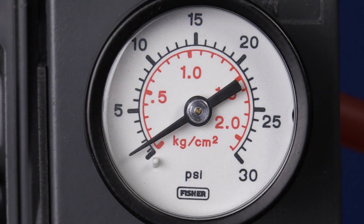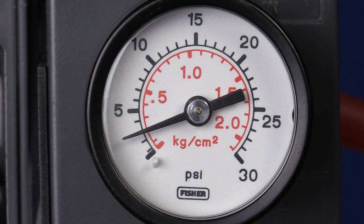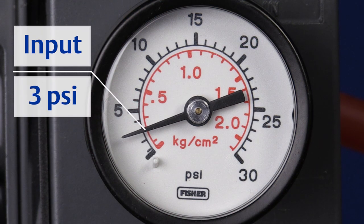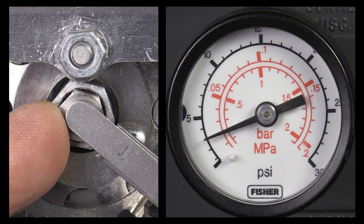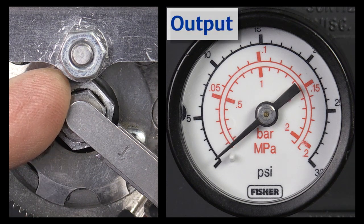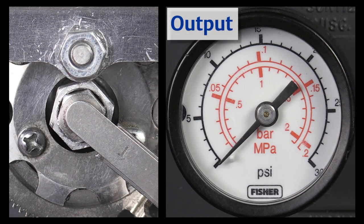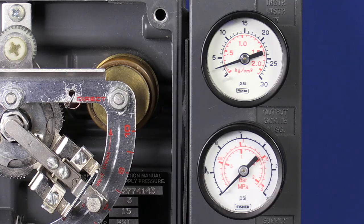Second, we'll increase our input signal to the bottom of the input range, in this case, three psi. Third, we'll adjust the nozzle in or out to make the needle on the output gauge sit softly on the zero pin of the output pressure gauge.